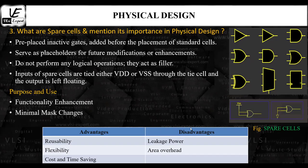The primary purpose of spare cells is functionality management. After a chip is manufactured, if any functional issues arise or improvements are required, spare cells allow for easier modification. Another purpose is minimal mask changes — by leveraging pre-placed spare cells, design changes can be made with minimal alteration to mask layers, leaving the base layers unchanged.